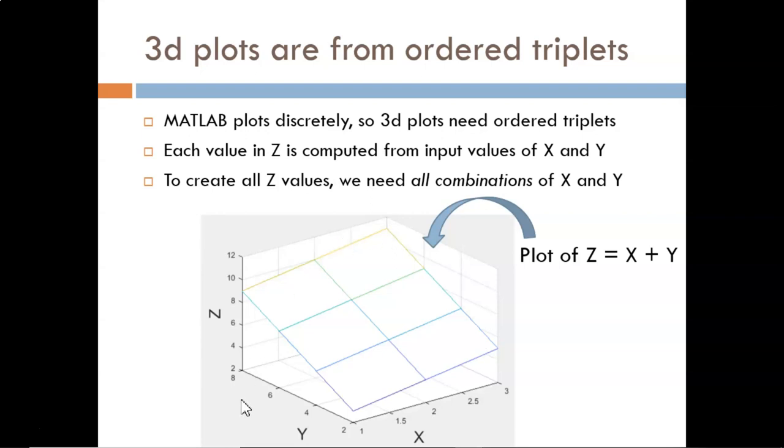The overall trend is clear. As X increases, Z increases, and as Y increases, Z increases. But how is this particular shape drawn in MATLAB? First, independent variable X is defined as going from 1 to 3 in steps of 1. Then, independent variable Y is defined as going from 2 to 8 in steps of 2.